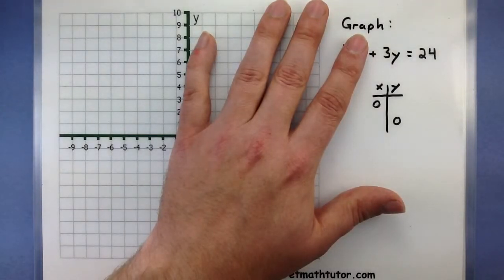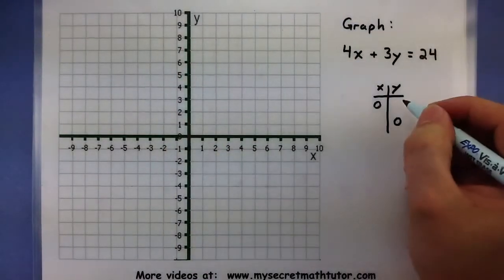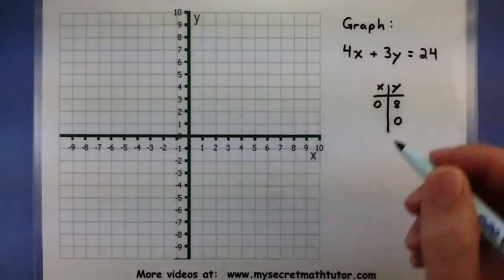In order for this to work out, y must be an 8. So we'll go ahead and put that in our chart. So when x equals 0, y would have to be 8.